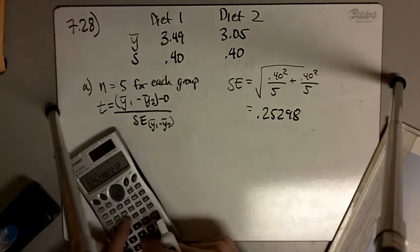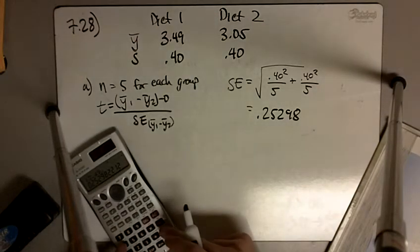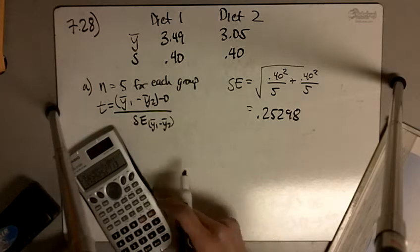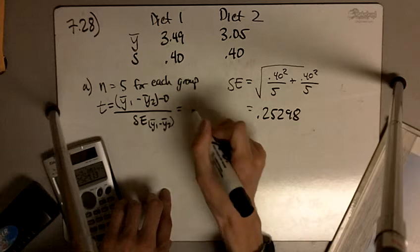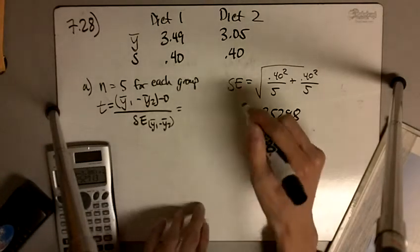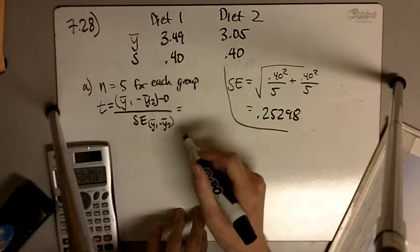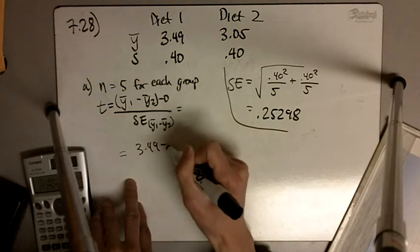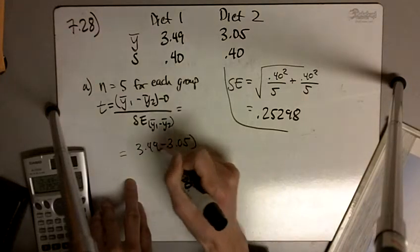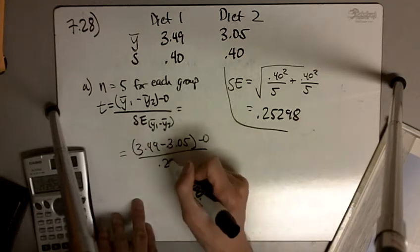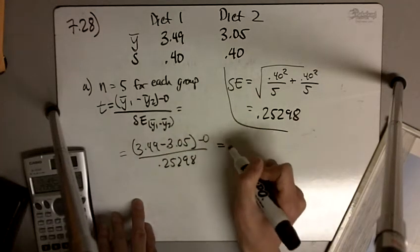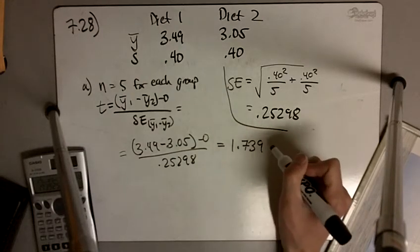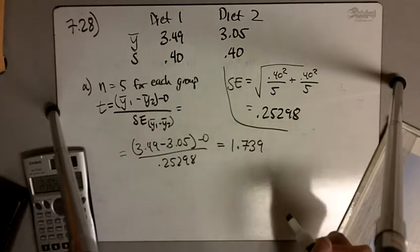So let me do 3.49 minus 3.05 divided by my thing. So if I do this, let me just set this equal to here. 3.49 minus 3.05 divided by this number. The t-statistic I get there is 1.739.